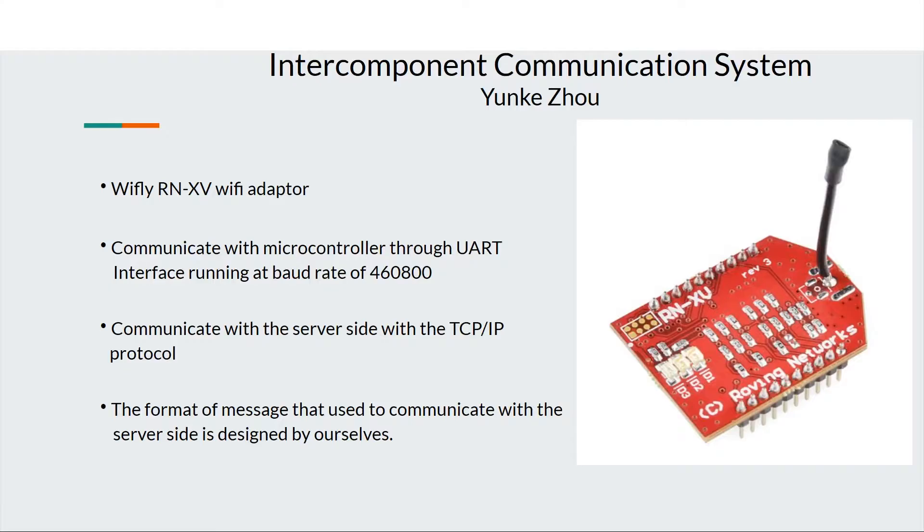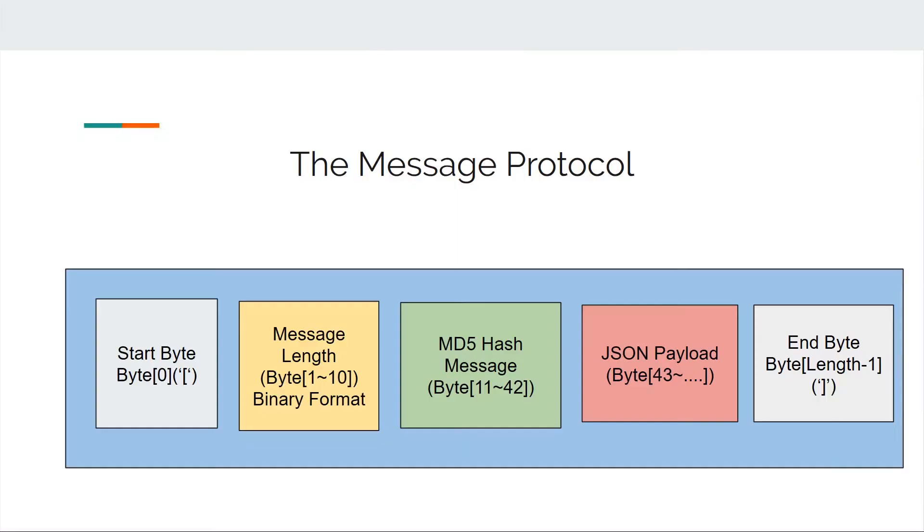The picture above shows our message protocol. Our message protocol consists of the following components: a start byte, an end byte, a 10-byte binary value which is used to represent the length of the whole message, a 32-byte MD5 hash value, and a JSON payload.